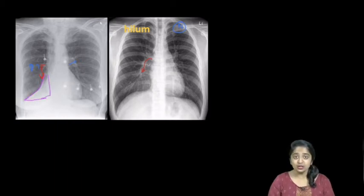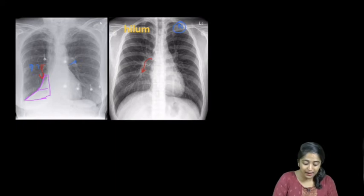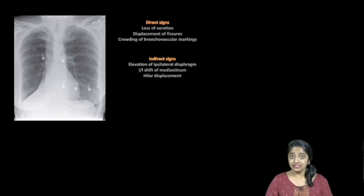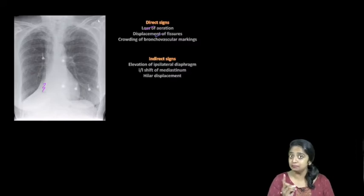So summarizing the direct and indirect signs of collapse. Yes, I've got loss of aeration, I've got displacement of the fissure where is it, it is over here.